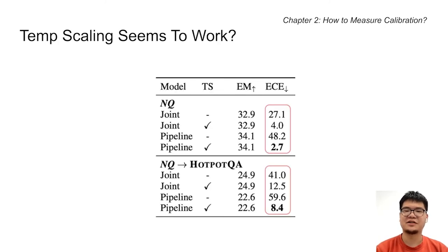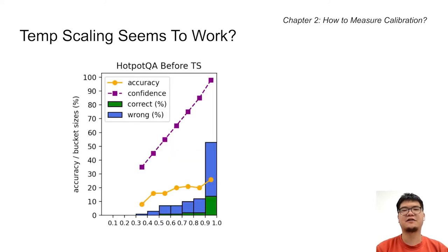Based on the results here, temperature scaling seems to significantly lower ECE with both joint and pipeline calibration. But does this really mean temperature scaling solved the problem? Let's look at the distribution of confidence scores before and after temperature scaling.